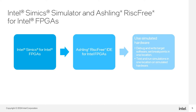The Intel Simix Simulator for Intel FPGAs is a full system simulator supporting the software development process through hardware simulation. Ashling RISC-V IDE for Intel FPGAs provides a software with a graphical interface to the Intel Simix Simulator, allowing you to control the simulation progress with a mouse and buttons in a GUI instead of entering commands on a CLI, which is also supported. You can debug target software using the Ashling RISC-V IDE debugger to view progress through your source code, set breakpoints, examine variable values and register contents, and view stack traces.